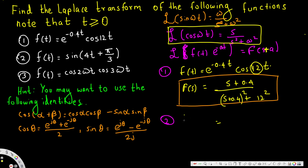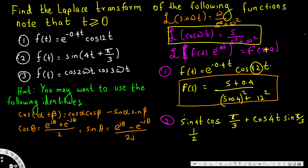It will expand as sin(4t)·cos(5/3) + cos(4t)·sin(5/3). Now cos(5/3) = 1/2, so we apply the Laplace of sin(4t): with ω = 4, that gives 4 over s² + 16. And sin(5/3) = √3/2, so we also have cos(4t) remaining.